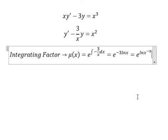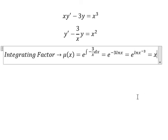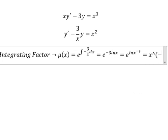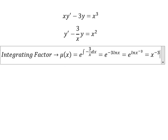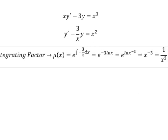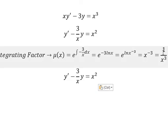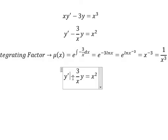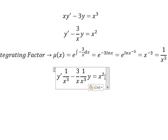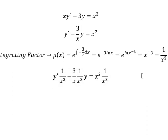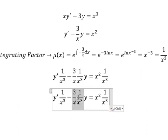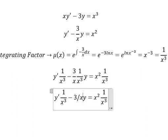And this one we have x to the power of negative 3, or we can write like this. That means we multiply both sides by this one, this one we have 3 over x to the power of 4, this one we have 1 over x.